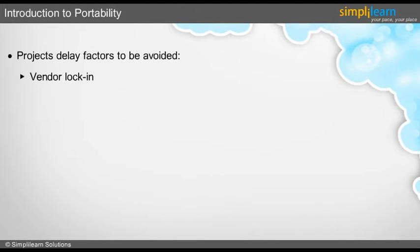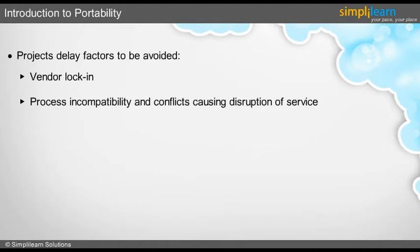The first problem is vendor lock-in. This is a situation where the user is unable to switch to another cloud offering or another vendor. The next problem is incompatibility of process causing disruption of service, which in turn causes malfunctioning of application within different cloud infrastructures.